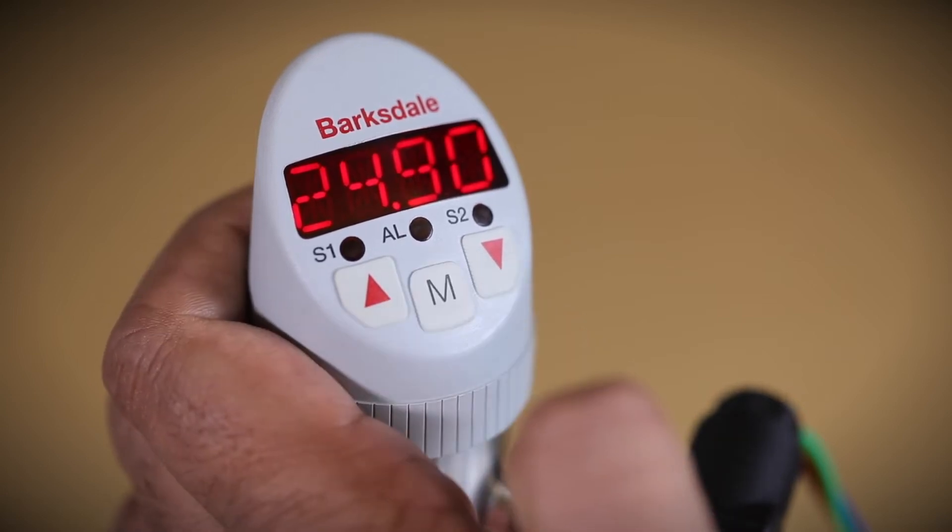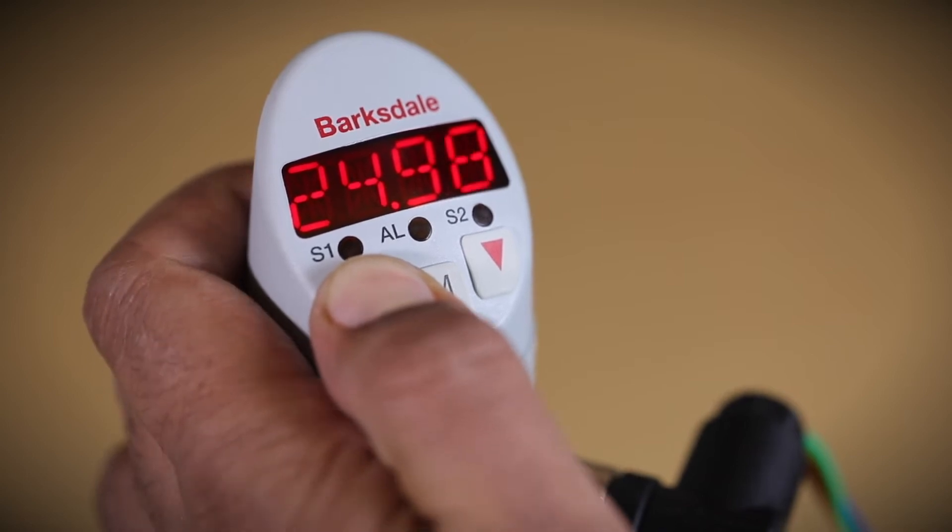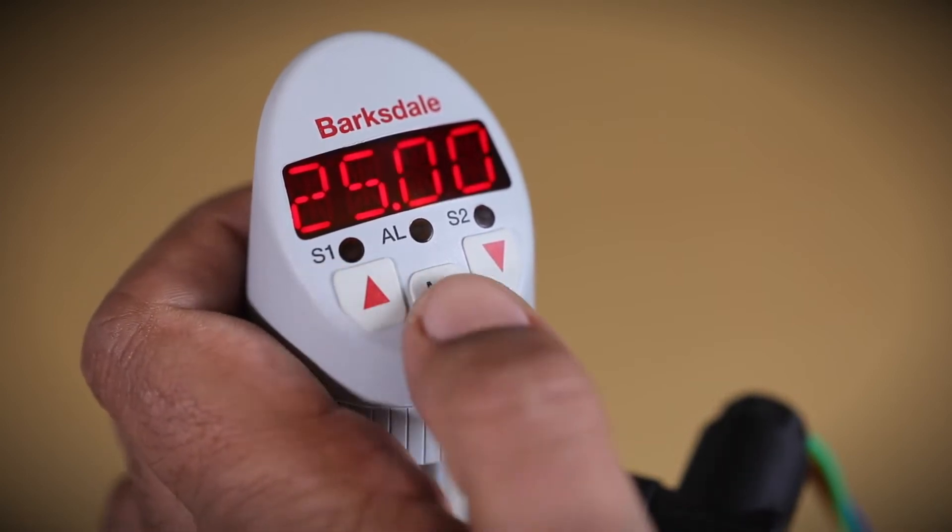To set switch point 1, press the descending navigation key and select SP1 by pressing menu key. Adjust the required switch point value by using ascending and descending navigation keys. Set the value by pressing the menu key.